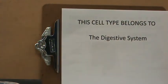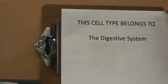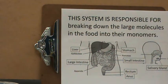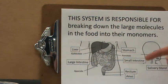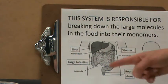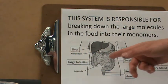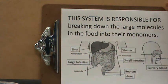This cell type belongs to the digestive system. This system is responsible for breaking down the large molecules in the food into their monomers. For example, it includes the stomach, small intestine, liver, large intestine, rectum and anus, and also the pancreas, gallbladder, appendix, and the salivary gland.